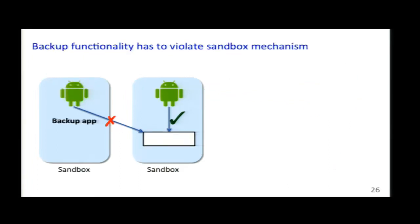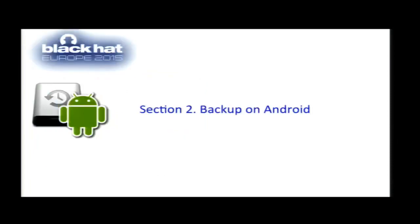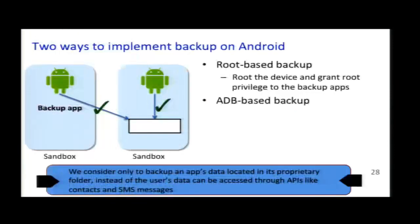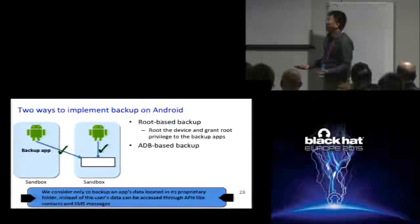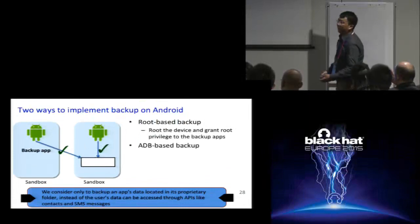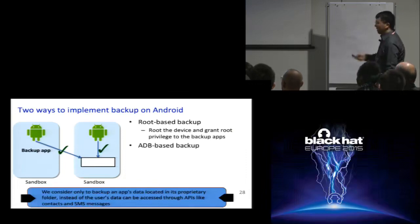In the backup function, a backup application wants to backup data belonging to another application, so essentially the sandbox must be violated. There are two ways of backup on Android. The first is root-based backup — after rooting the device, the backup application is granted root privilege and naturally has access to any other application's internal storage. The second is ADB-based backup. ADB runs at a higher privilege than a normal application — although lower than root, it has privileges that normal applications do not have.